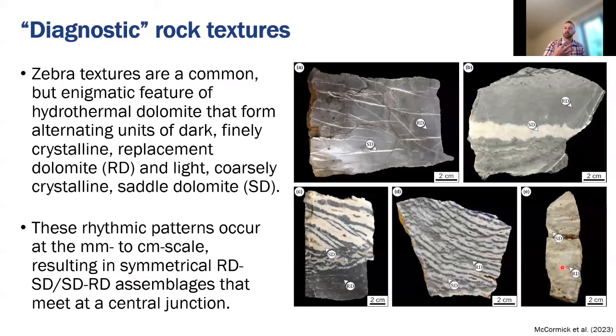For the next chapter of my PhD I was really interested in the rock textures that we observe in these structurally controlled settings. These are what many people refer to as zebra textures or zebra dolomite. But just know that you can have later mineralizations such as fluorite or sphalerite that can replace and overprint the dolomite. So referring to it as zebra dolomite maybe is not necessarily correct. So zebra textures comprise these alternating units of replacement dolomite in gray and saddle dolomite in white. And it makes these rhythmic patterns that occur at a millimeter to centimeter scale. They form these symmetrical replacement dolomite, saddle dolomite, saddle dolomite, replacement dolomite packages that meet at a central junction between adjacent bands of this saddle dolomite. And there's often a little bit of porosity preserved between the adjacent units of saddle dolomite. Many people have suggested that these form by fracturing and that's a little bit of fracture porosity left between the adjacent units of saddle dolomite.